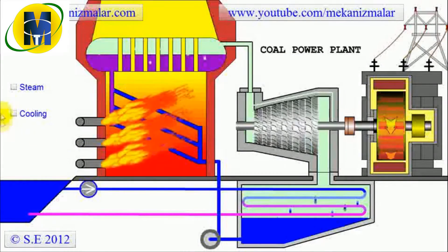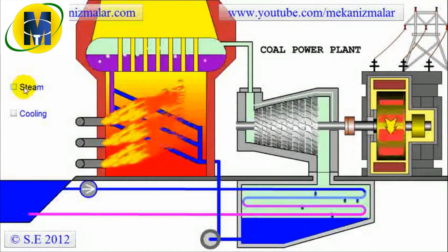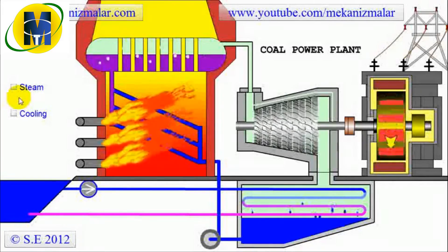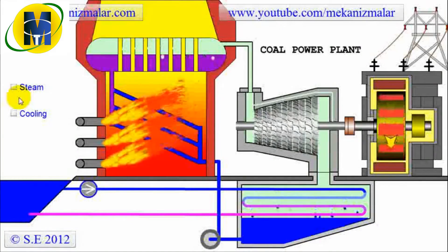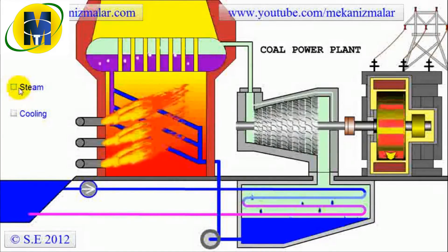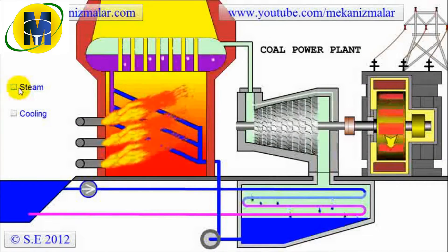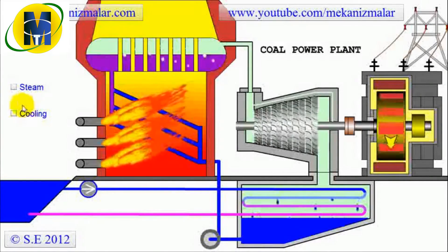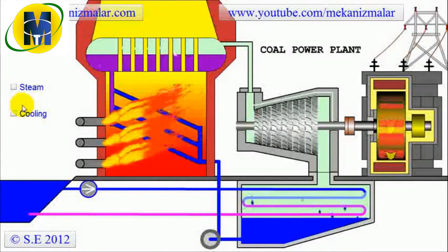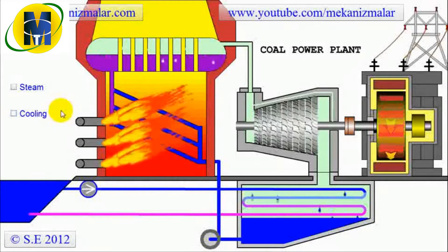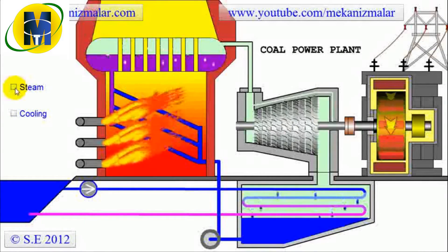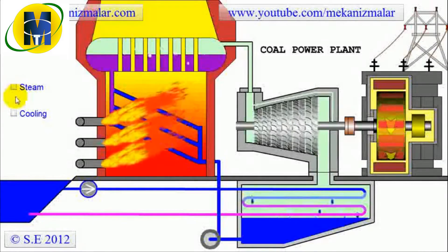The generated electricity is finally transferred to the grid through a transformer and is ready to be consumed by the public. There are two major water cycles in any power plant, whether it is a coal, nuclear, or a gas power plant. The first is the closed loop power producing water cycle, which we call the steam cycle. The second is the open loop cooling water cycle. No thermal power plant can operate without these two cycles.